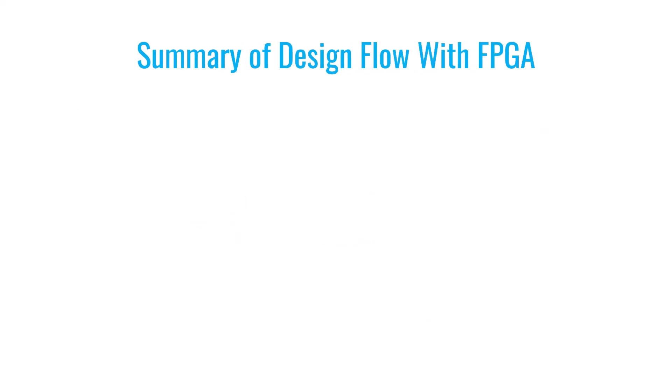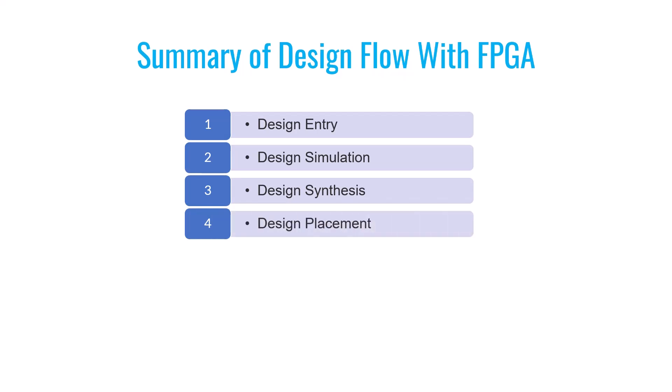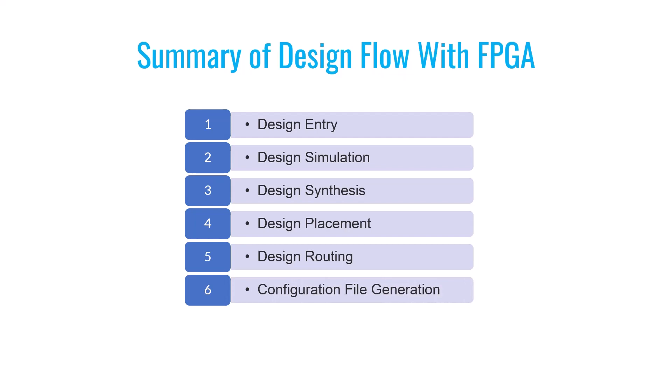Let's review the design process once again. First, you enter your design into implementation software using a hardware description language. Second, you run simulations to check if your design works as expected. Third, you perform synthesis, transforming your design into a form suitable for FPGA implementation. Then there is placement — deciding where each part goes on the FPGA — followed by routing, connecting different parts using the FPGA's internal wires. Finally, you compile all results into a bit file and use a specialized programmer to send it to the FPGA so it becomes the actual circuit you designed.